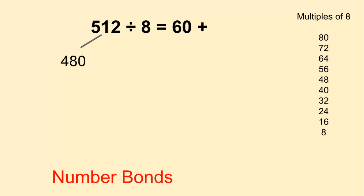480 takes a big chunk out of 512. So let me start there. If 8 times 60 is 480, what's left? 512 is 480 plus 32. Oh, hey, wait a minute. 32 is a multiple of 8 as well. 8 times 4 is 32.